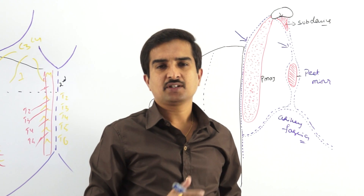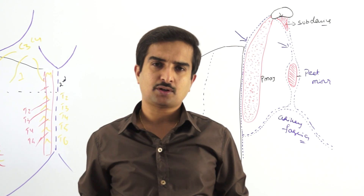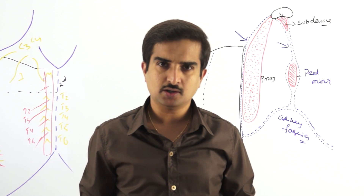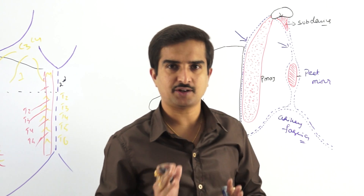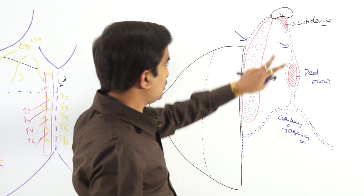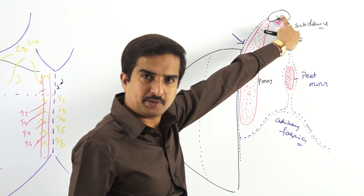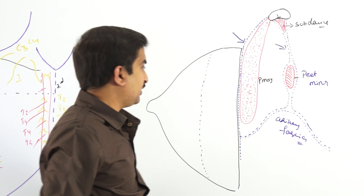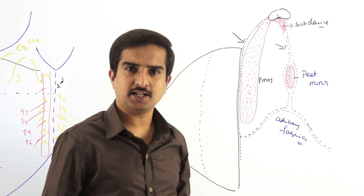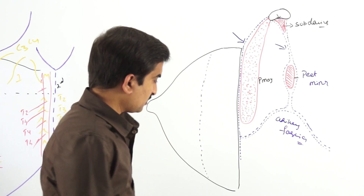Returning to the deep fascia of the pectoral region — the pectoral fascia — it is so named because it encloses the pectoralis major muscle. Now let us see its attachments. Superiorly, the pectoral fascia gives attachment to the clavicle.